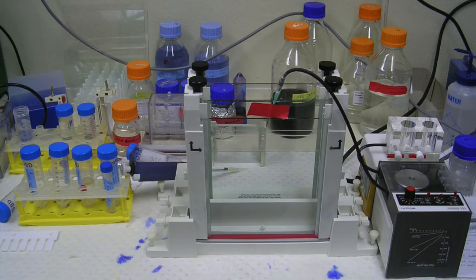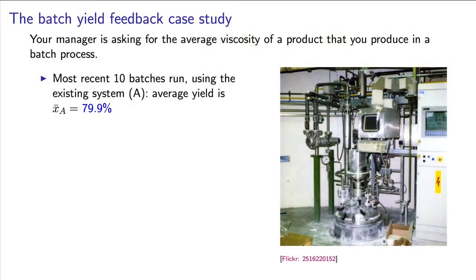Let's take a look at an example here. A company has been operating their process for many years and recorded the batch yield. This is a critical outcome of quality. The 10 most recent samples from the process show the average yield is 79.9%.